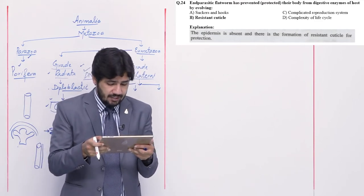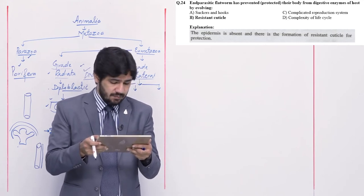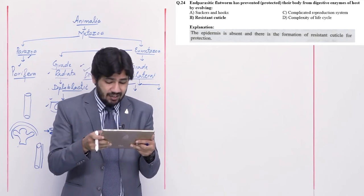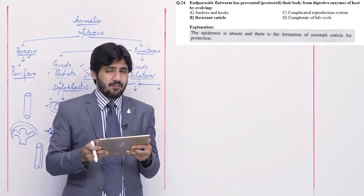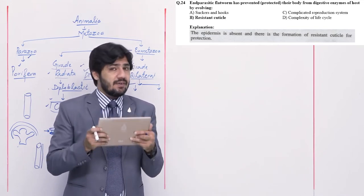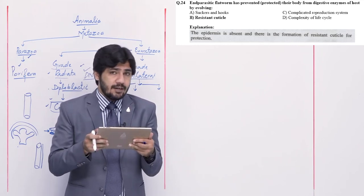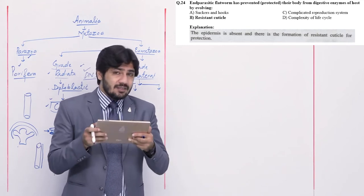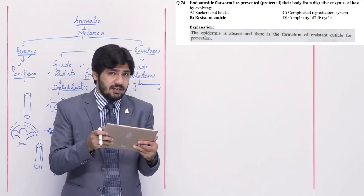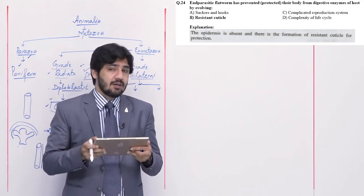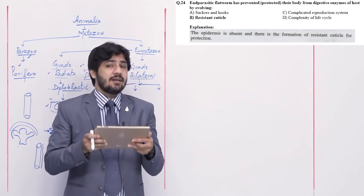Question number 24: endoparasitic flatworms have protected their body from the host's digestive system by evolving — alpha suckers and hooks, beta resistant cuticle, charlie complicated reproductive system, or delta complexity of life cycle. Suckers and hooks are for attachment, not protection — alpha is not right. Resistant cuticle protects them from the host's digestive system — right option is beta. Complicated reproductive system and complexity of life cycle relate to their overall life, not protection from host digestion.